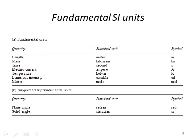The fundamental SI units are listed on slide number 5. The quantities are: length, mass, time, electrical current, temperature, luminous intensity — which is an optical quantity — and amount of matter. The corresponding units are: meter, kilogram, second, ampere, kelvin, candela, and mole, each with their associated symbol. We also have two supplementary fundamental units: plane angle and solid angle, with units radian and steradian, and their associated symbols.